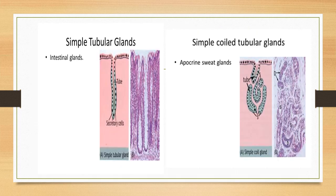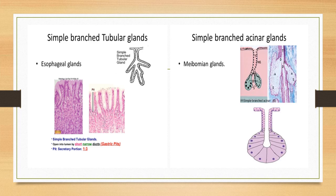The photomicrograph of simple tubular glands shows long ducts, pits, and tube-like acinar portions — these are the intestinal glands. Tubular glands can also be coiled; for example, the apocrine sweat glands have a tube-like secretory unit that is coiled on itself, so they are called simple coiled tubular glands. The simple branched tubular glands include the esophageal glands and Brunner's glands of the duodenum.